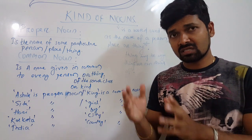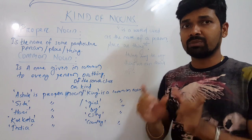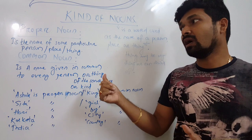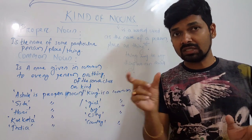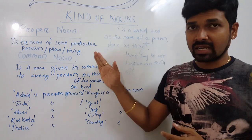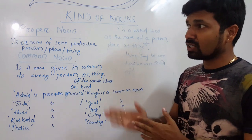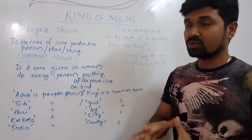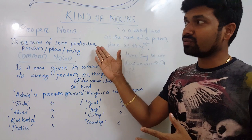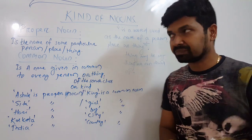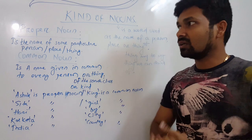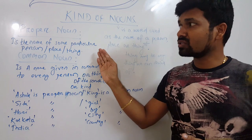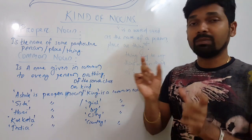In the sentence 'Asoka was the greatest king in Indian history,' Asoka refers to a particular person, so Asoka is a proper noun. King is a common noun. The definition of a proper noun is: a word which is used to represent the name of some particular person, place, or thing.